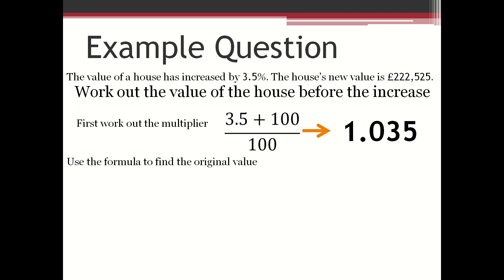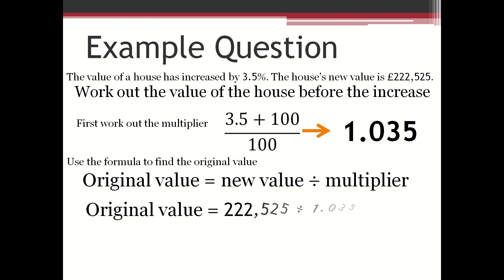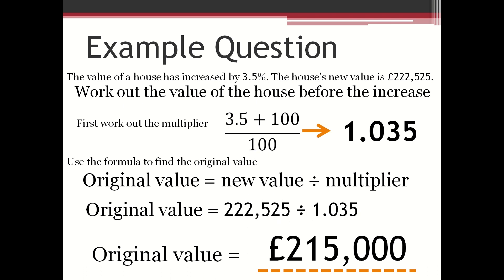Then you use the formula to find the original value. So original equals new divided by multiplier. The original value is equal to £222,525 divided by 1.035, and the original value is £215,000. So that is the value of the house before the increase.